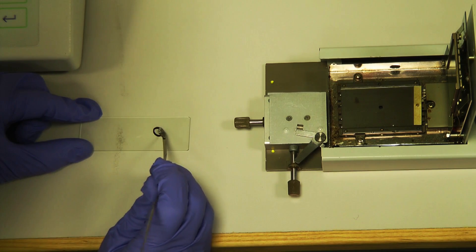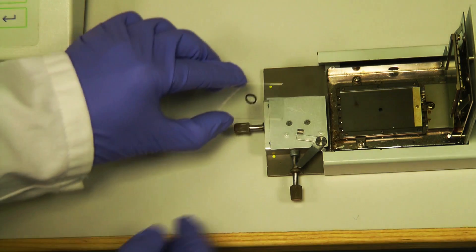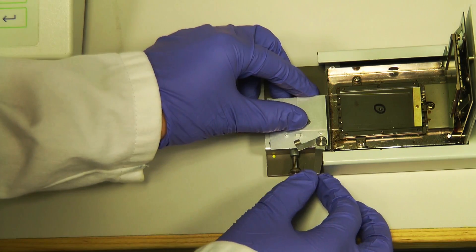Place a small amount of sample, at most a few crystals, within the marked area. Cover with a slip and slide the sample back into the stage, then close the lid.